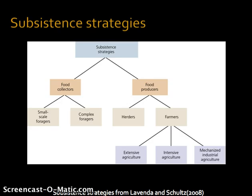In terms of subsistence strategies, there are two main divisions: food collectors and food producers. Under food collectors, you have small-scale and complex foragers, depending on the environmental resources which are present. In terms of food producers, you have both herders as well as farmers, and farmers engage in a number of different activities from extensive all the way to mechanized industrial agriculture.